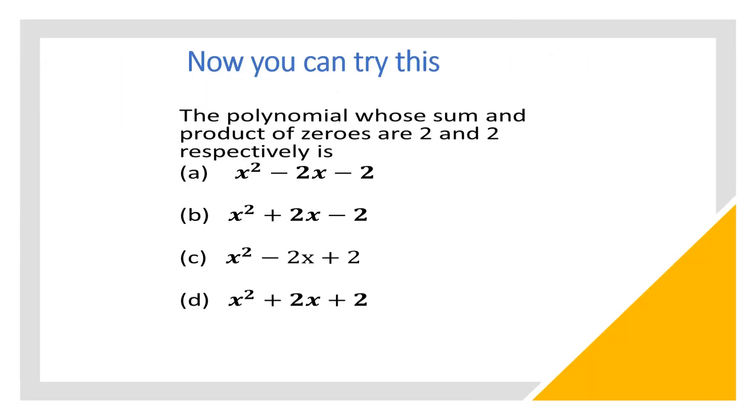Now you can try this question: the polynomial whose sum and product of zeros are 2 and 2 respectively is. Four options are given. Please write the correct answer in the comment box.